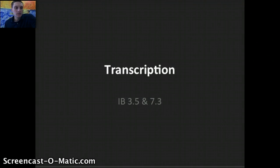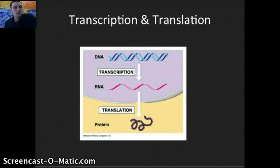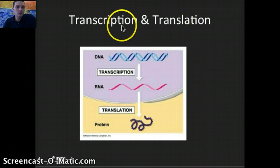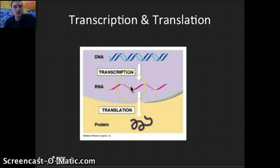In this video, we're going to talk about transcription — this is IB 3.5 and 7.3. Transcription is part of a process called protein synthesis, and it's the first step in actually making a protein, which is multiple amino acids connected together making a polypeptide chain. Transcription and translation are the two steps that make this happen. Transcription is when we're making our messenger RNA, and translation is where we're actually conjoining amino acids. In this video, we'll look at transcription; in the second video, we'll look at translation.